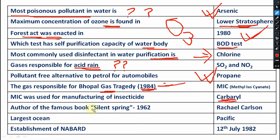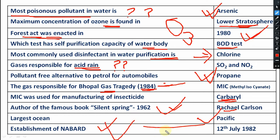Author of the famous book 'Silent Spring' — written by Rachel Carson in 1962. Important from an entomological point of view. Largest ocean is your Pacific. This is important for AFO and other banking exams. Establishment of NABARD — that is 12th July 1982.